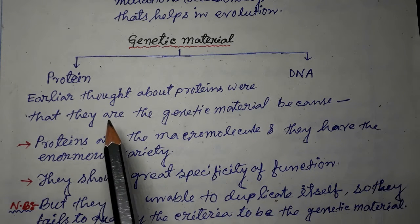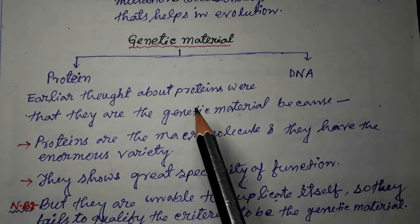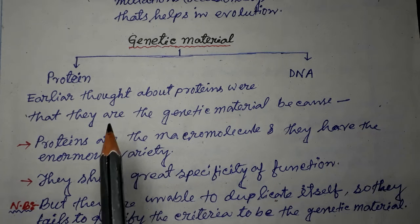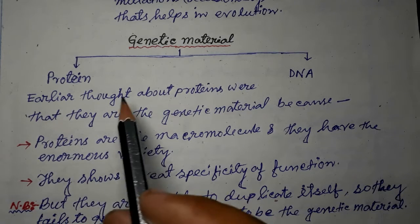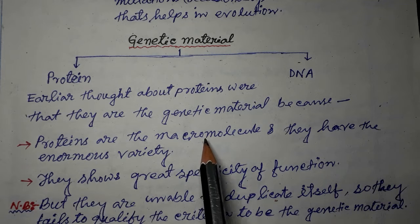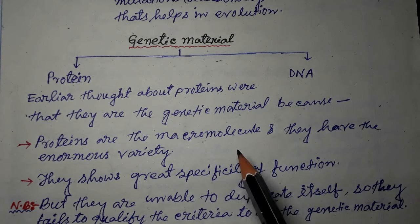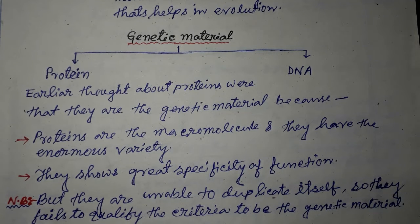In the earlier time, proteins were also thought of as genetic material, alongside DNA, because both proteins and DNA have features like those of a genetic material. Proteins were considered genetic material because they are macromolecules with enormous variety. They show great specificity of function.